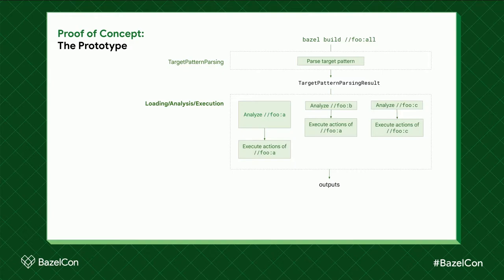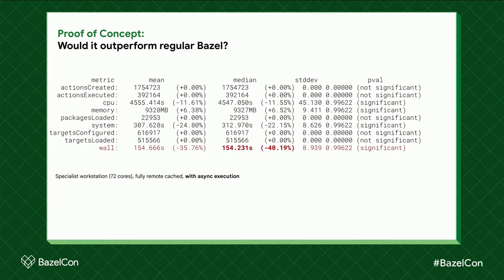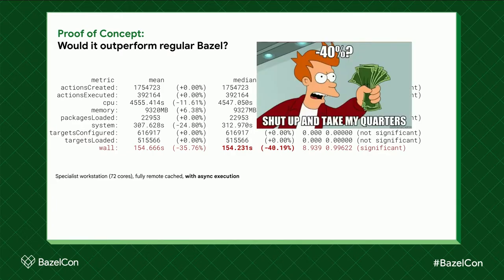If target c happens to have a really short analysis but a really long execution, it's good that we start early because we can save some time there. We did some measurements and the result is 40% of wall time saved. This is with async execution — another experimental feature I won't talk about today — and with remote execution and remote caching. At that point we were like, 'just shut up, we'll do it.' And that takes us to the next part: implementation.